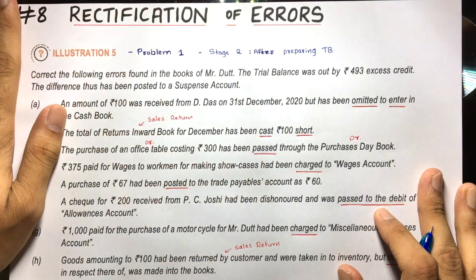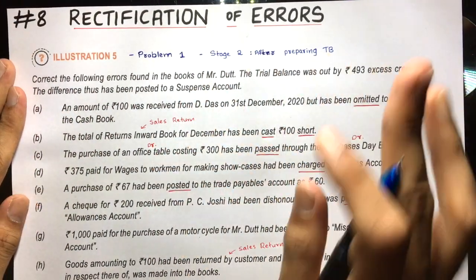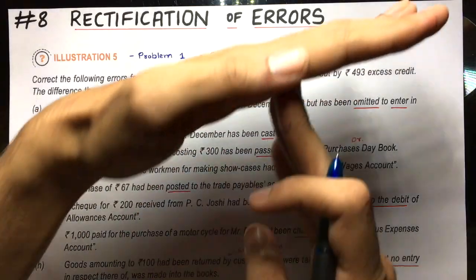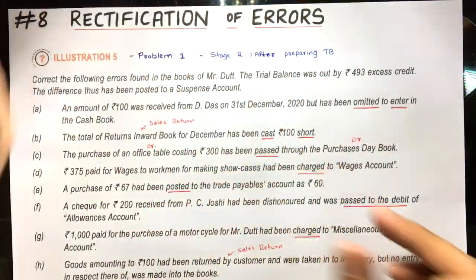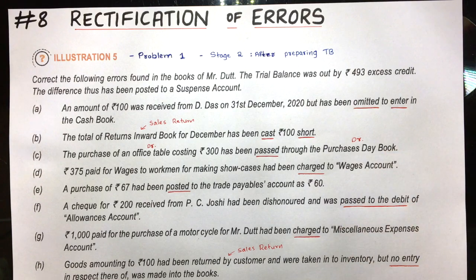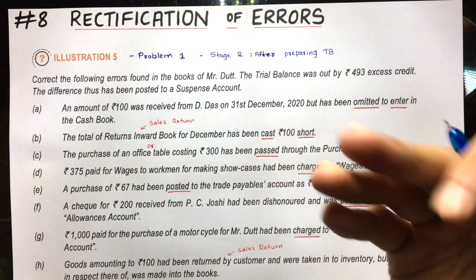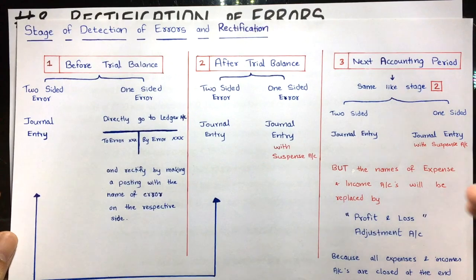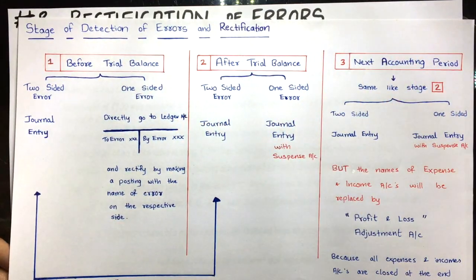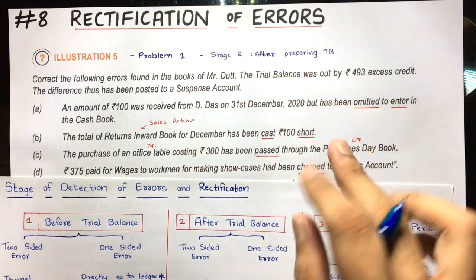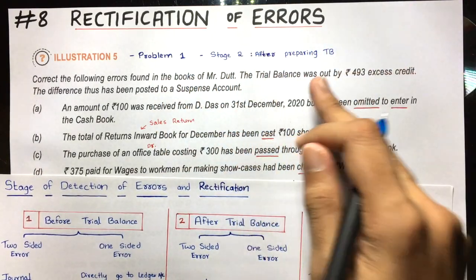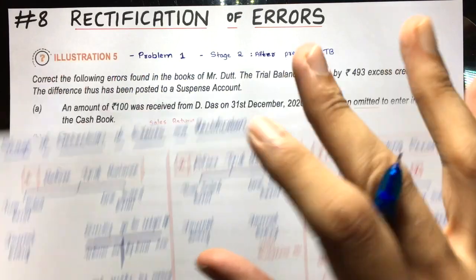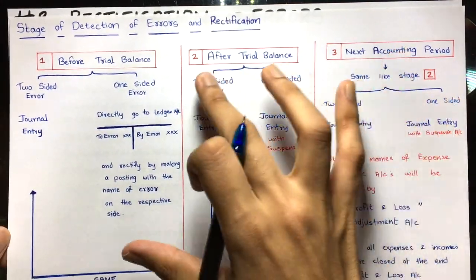Since the suspense account has a debit balance, when we prepare the suspense ledger account we will take ₹493 on the debit side as 'To Balance b/d'. Also note the stage: the trial balance has already been prepared, so this is a Stage 2 question — after preparing the trial balance.